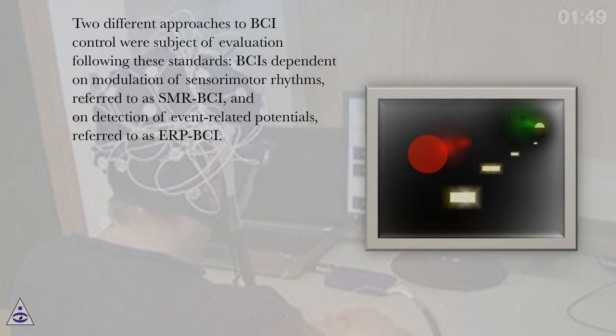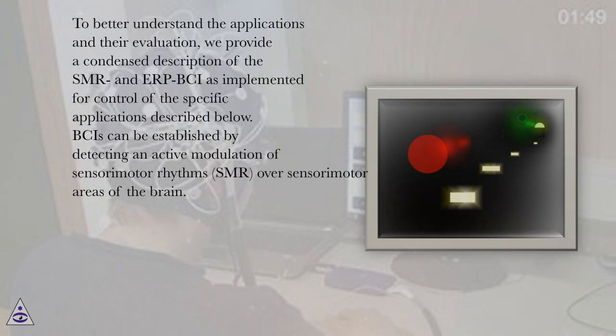Two different approaches to BCI control were subject of evaluation following these standards: BCIs dependent on modulation of sensory motor rhythms, referred to as SMR-BCI, and on detection of event-related potentials, referred to as ERP-BCI. To better understand the applications and their evaluation, we provide a condensed description of the SMR and ERP-BCI as implemented for control of the specific applications described below.